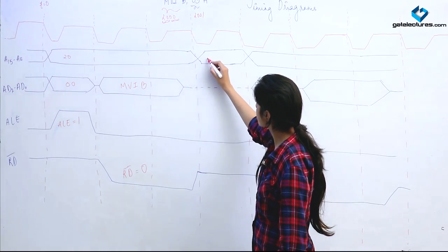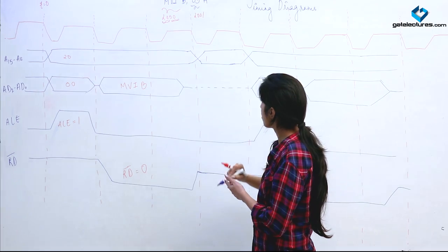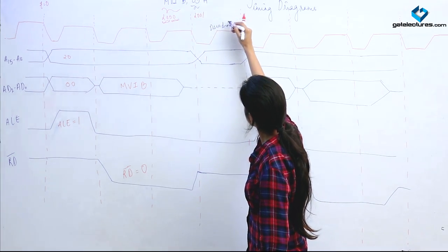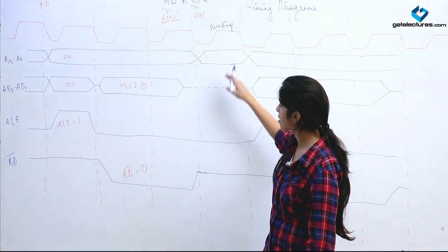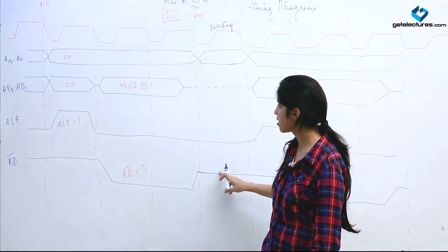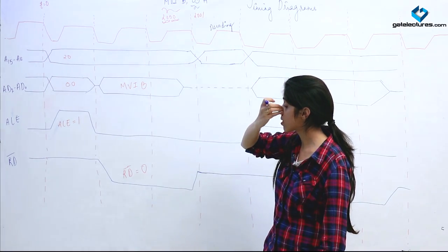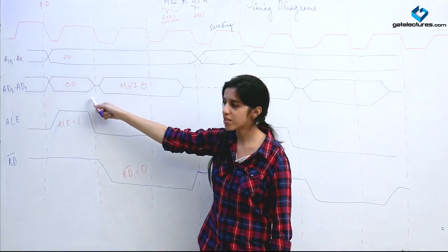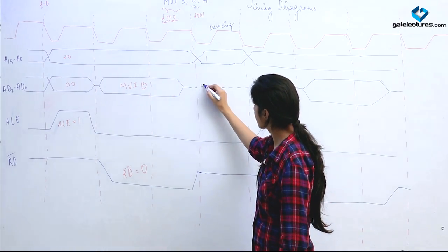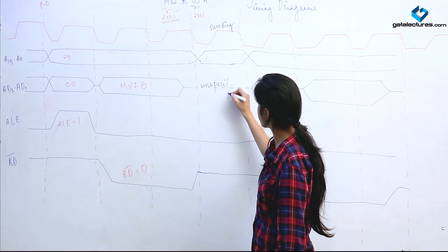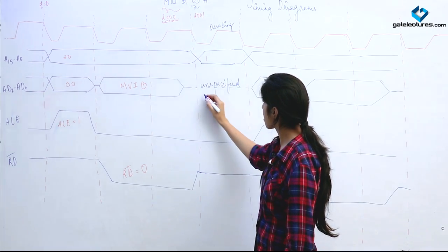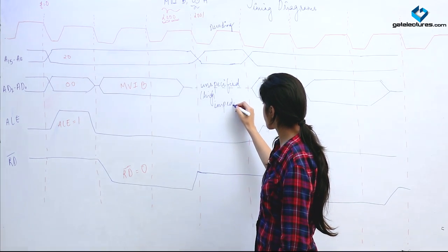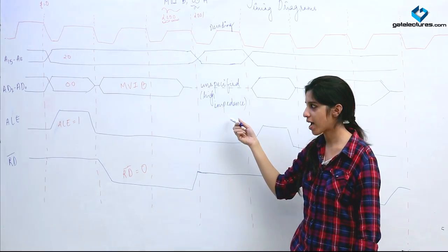Next is the decoding cycle. Decoding of the instruction takes place in one clock cycle — one T-state is required for the processor to interpret what instruction has been given. During this cycle, the address bus and the multiplexed data bus are in a high-impedance state, since this bus is not needed in this clock cycle.